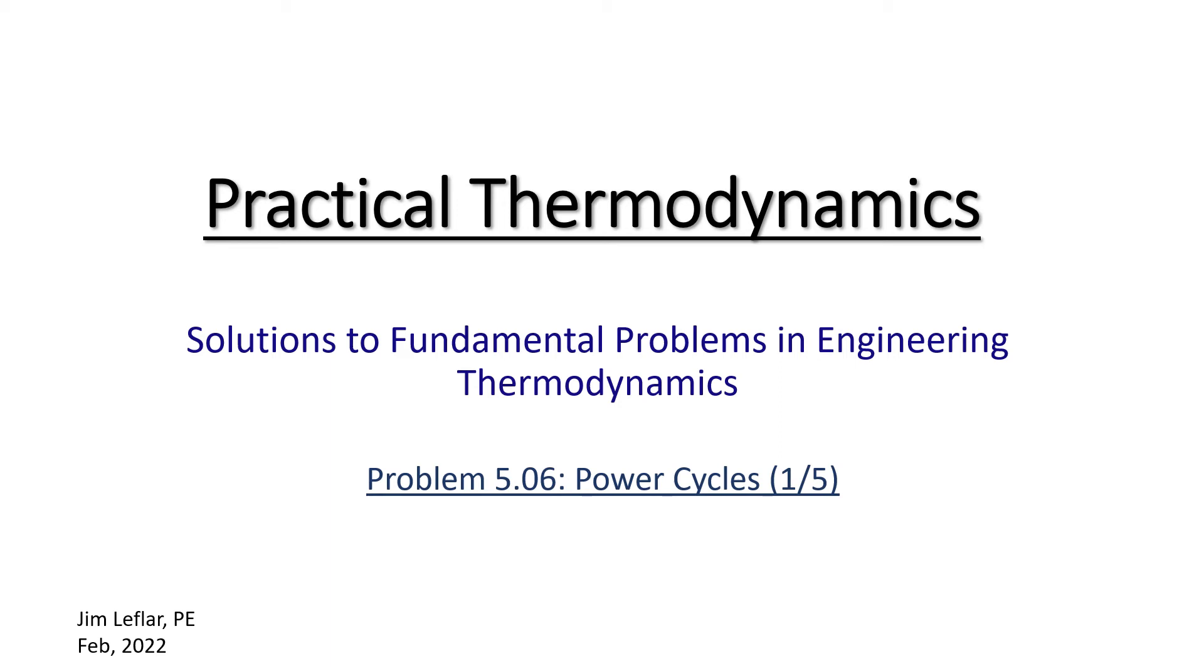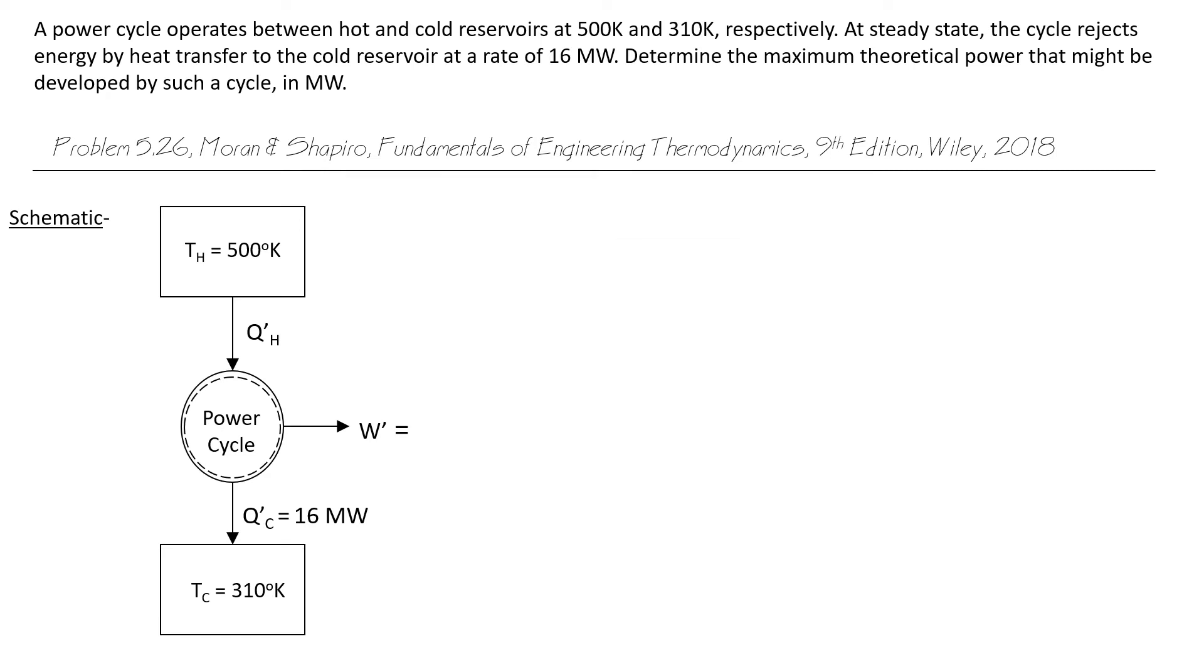Let's evaluate another power cycle. This time let's imagine a reversible power cycle and see what it's capable of. A power cycle operates between hot and cold reservoirs at 500K and 310K respectively. At steady state the cycle rejects energy by heat transfer to the cold reservoir at a rate of 16 megawatts. Determine the maximum theoretical power that might be developed by such a cycle in megawatts.